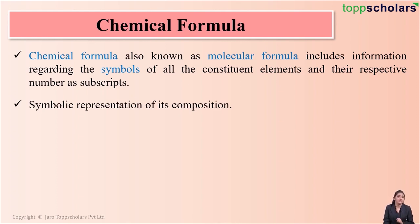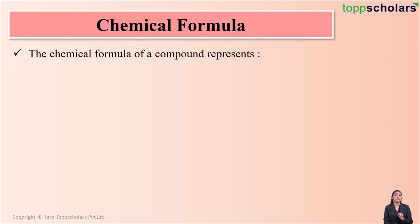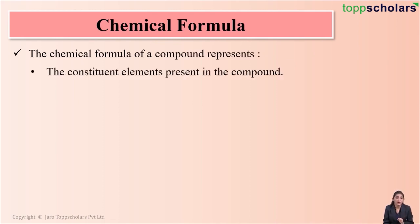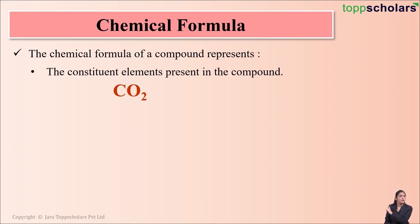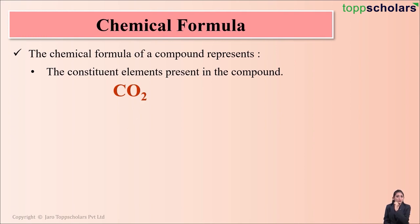What does a chemical formula represent? A chemical formula gives you information about the constituent elements that are present in the compound. For example, in CO2, the symbol C represents carbon and the symbol O represents oxygen. So here we can see that CO2 is made up of two constituent elements: carbon and oxygen.